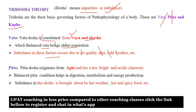Pitha Dosha originates from Agni and has hot, bright, and acidic characteristics. In simple words, it relates to acidity, indigestion, and stomach problems. When Pitha is balanced, it helps digestion, metabolism, and energy production. Imbalance in Pitha is brought about by hot weather and hot spicy food — eating spicy food can lead to indigestion, which is Pitha Dosha.